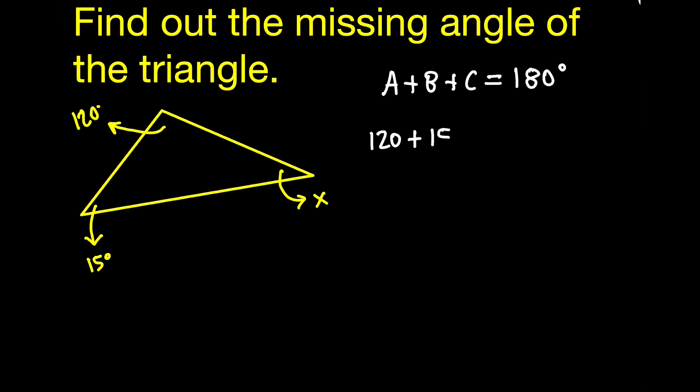So we would add 120 plus 15 plus x, which is our unknown, is equal to 180. Add all your common terms on the left. That gives you 135 plus x is equal to 180.